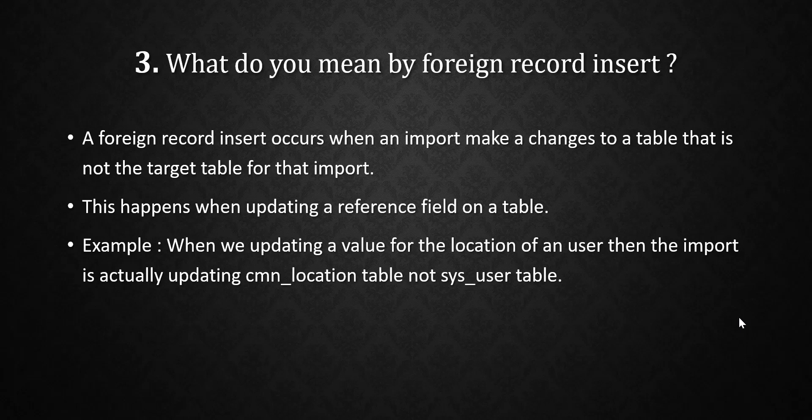Next question: what do you mean by foreign record insert? A foreign record insert occurs when an import makes changes to a table that is not the target table for that import. This happens when updating a reference field on a table. For example, when updating the location value for a user, the import is actually updating the cmn_location table, not the sys_user table. You will see this option when creating an event-based transform map — there is an option for 'on foreign record insert'.